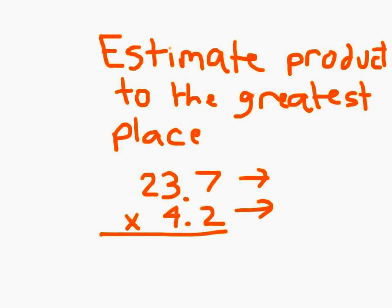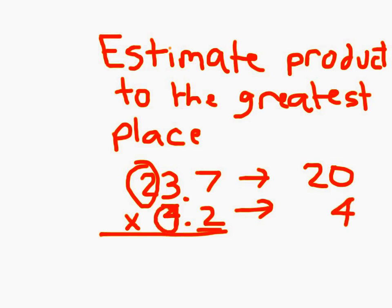Another type of problem you might see is if you are asked to estimate the product to the greatest place. In this case, the greatest place here is the tenths place. So, we would round it to the tenths place. 23.7 to 20. 4 and 2 tenths still, the greatest place is the ones place still. So, that's times 4. And 20 times 4 is 80.